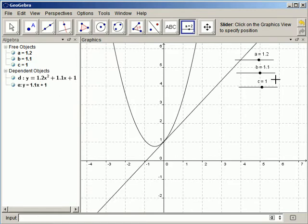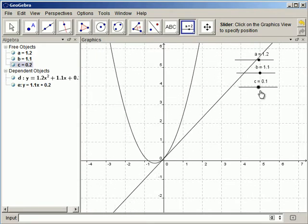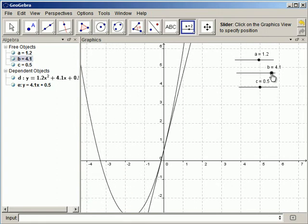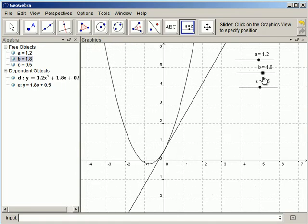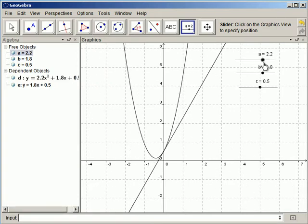So we know what happens when we vary the c, or at least you should have figured that out by now with these other explorations. Look what happens when I change b, or the coefficient of x, and then let's see what happens when I change the coefficient of x squared.